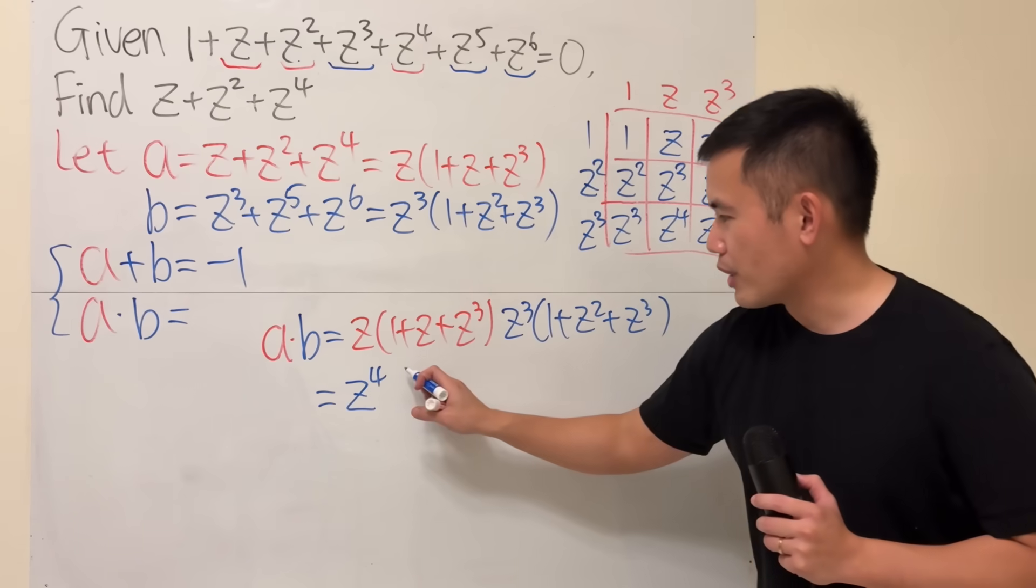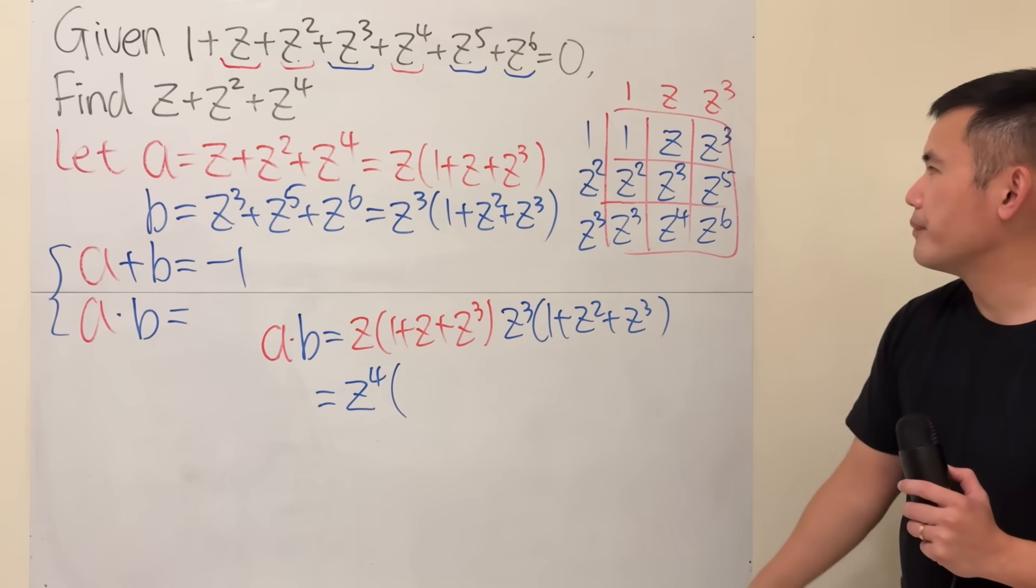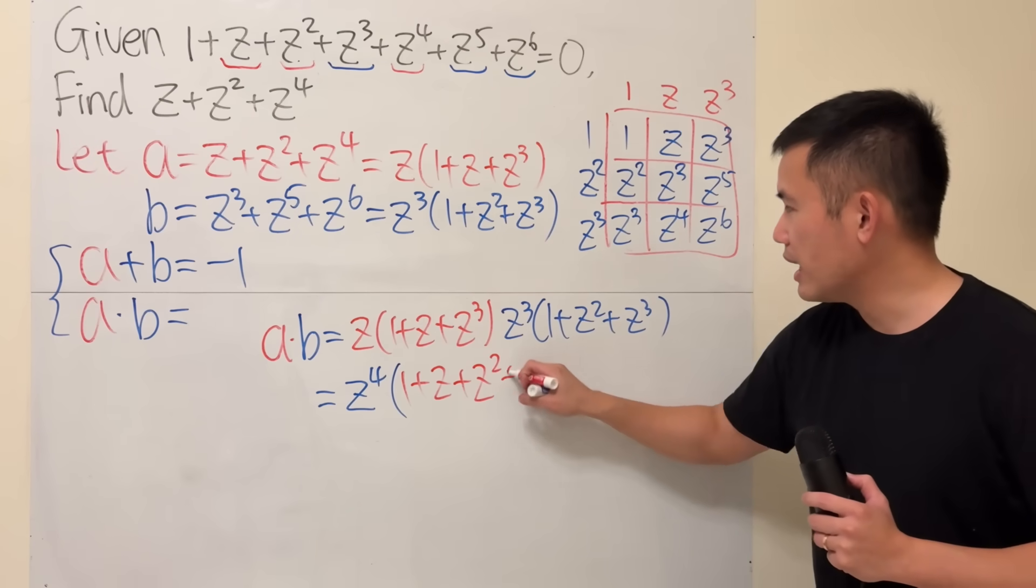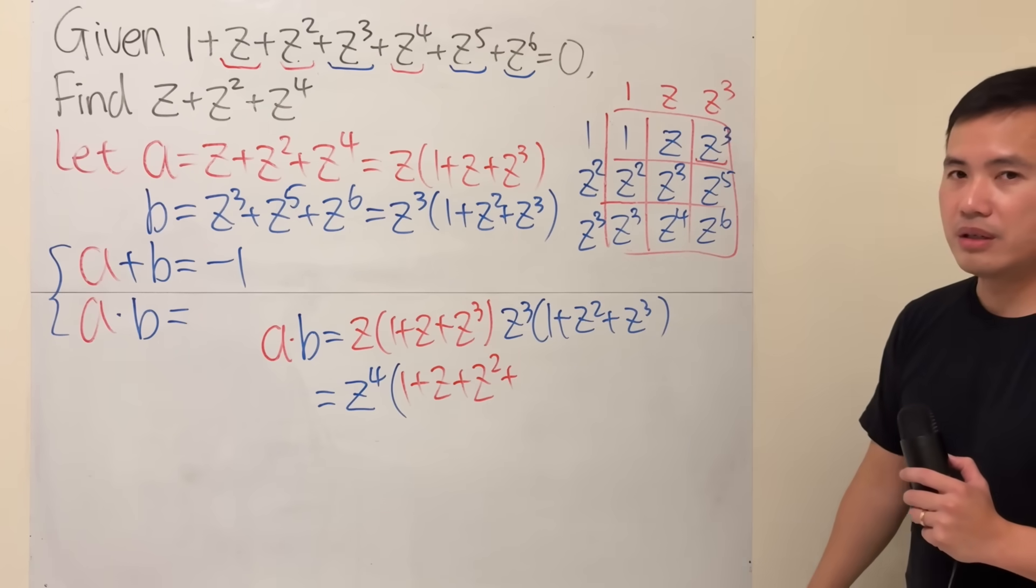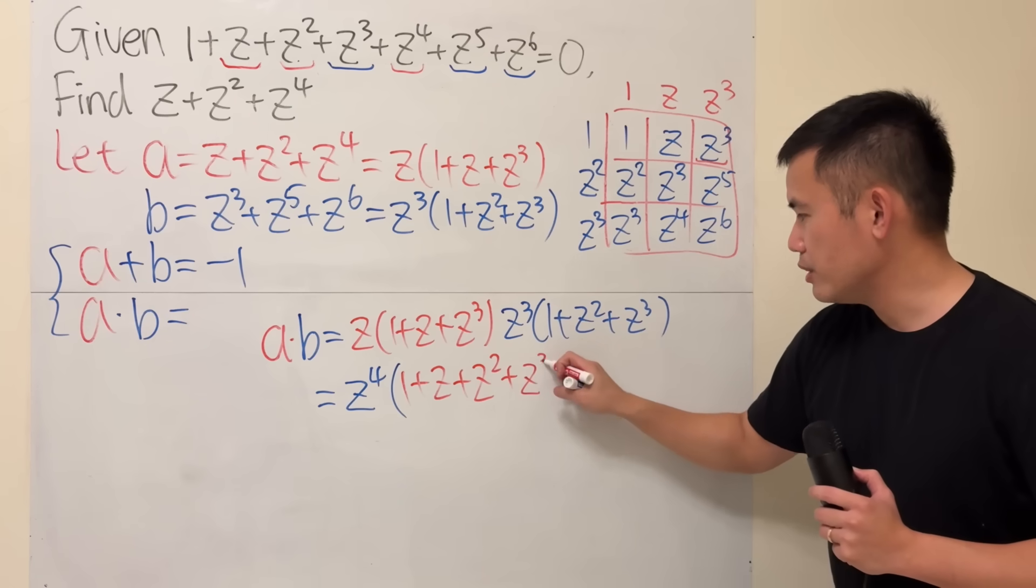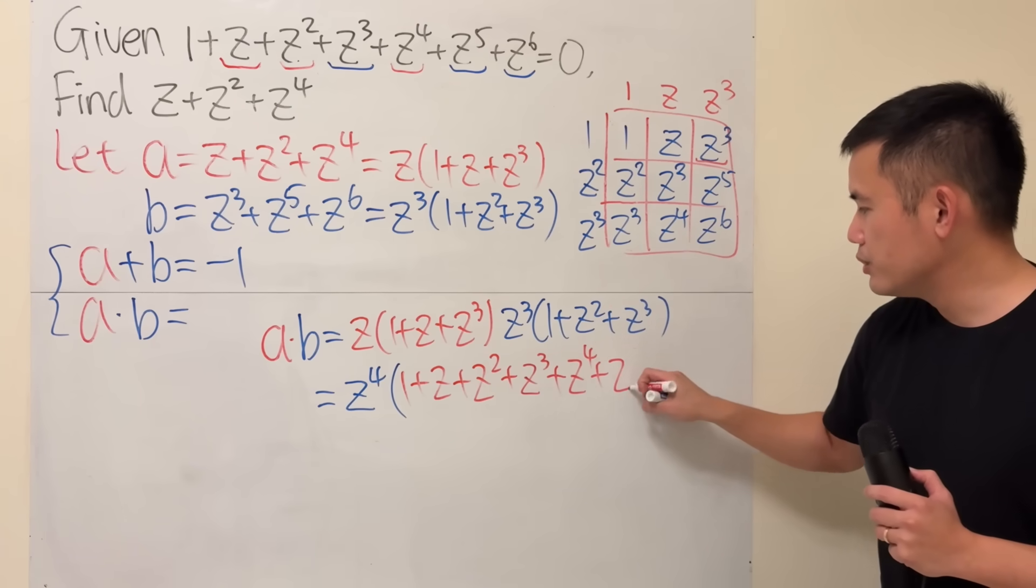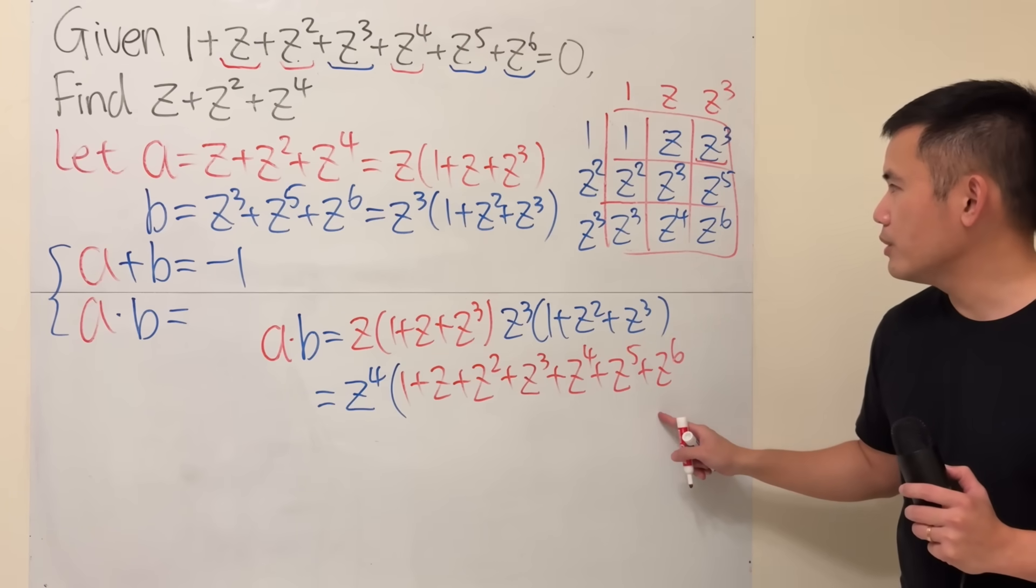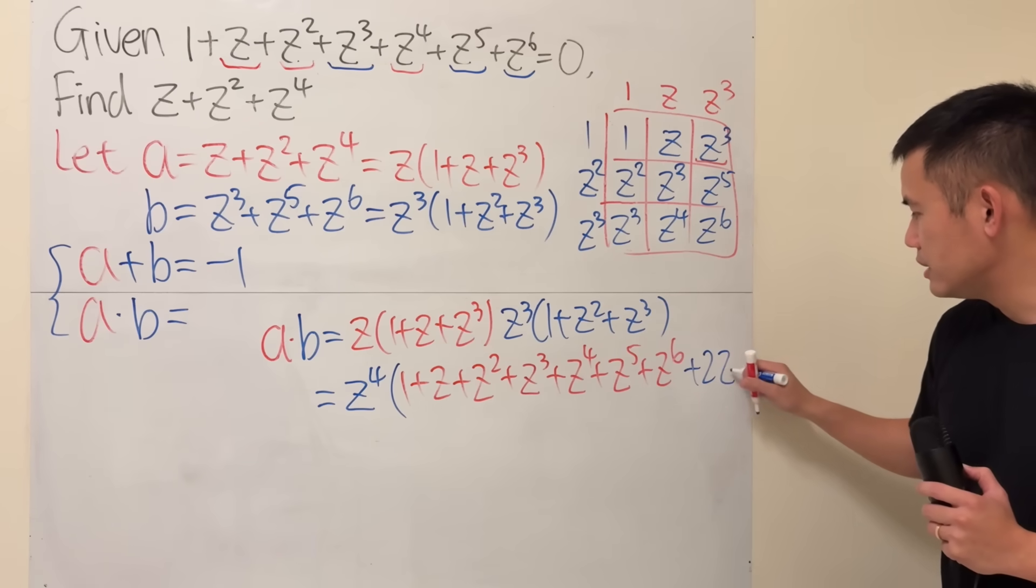I'm going to write down the result right here. But I'm going to put it down in the following way: 1 plus z plus z squared plus one of the z cubed. Doesn't really matter which one you put out. And then you continue: z to the fourth, z to the fifth, z to the sixth. Well, we still have two more. So let's go ahead and add 2z cubed.